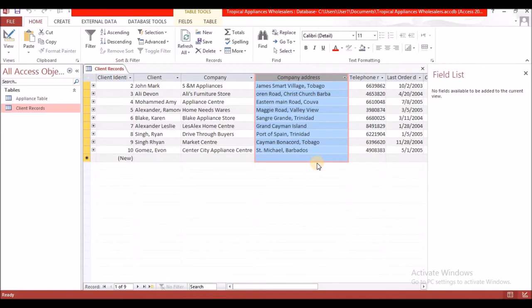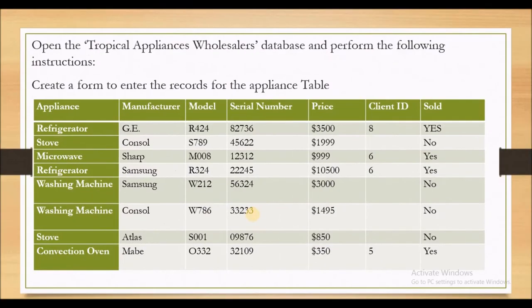Here we are, we're finished with this table. Let us now look at the next task. It says to open the Tropical Appliance Wholesalers database and perform the following instructions. It says to create a form to enter the records for the appliance table. We already created the appliance table, but to populate the table we are going to use the form object.